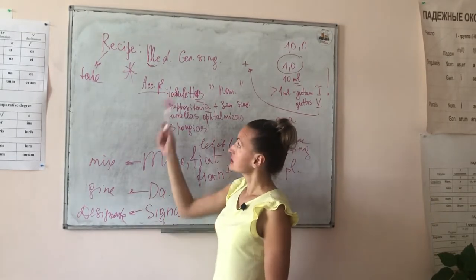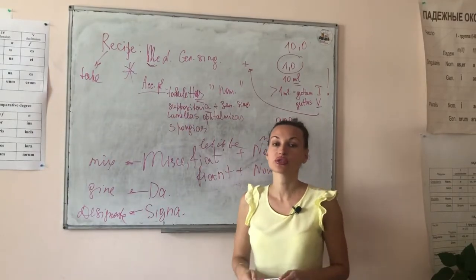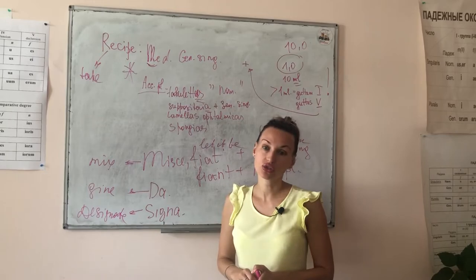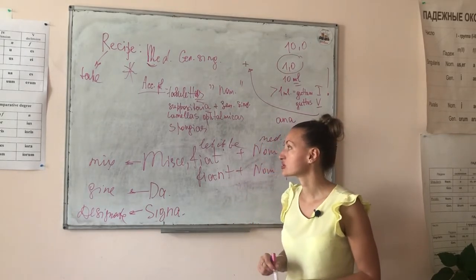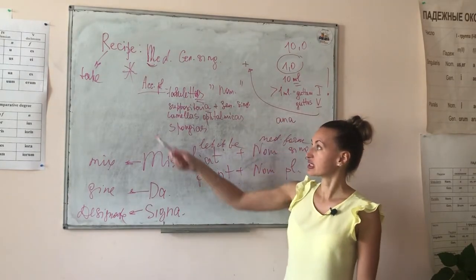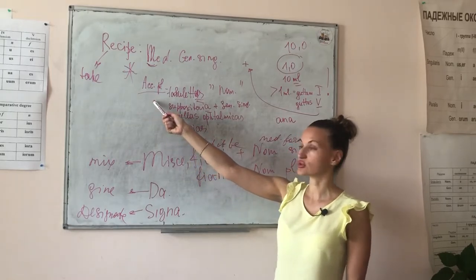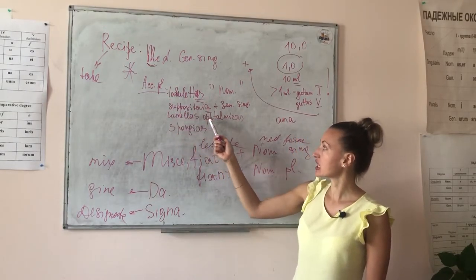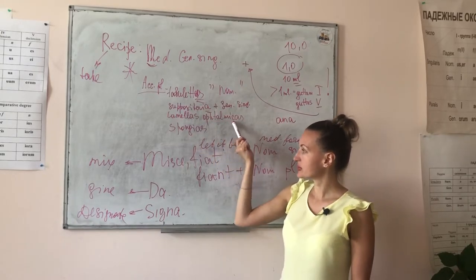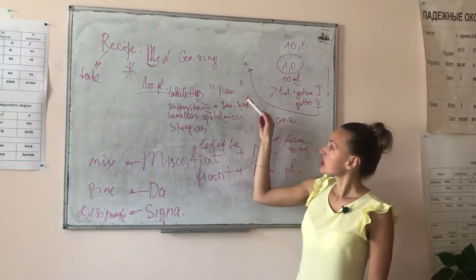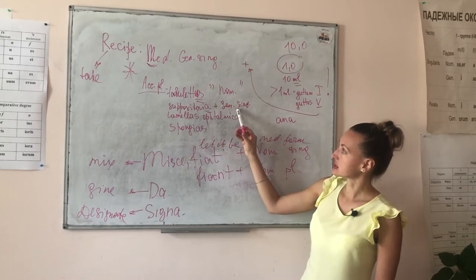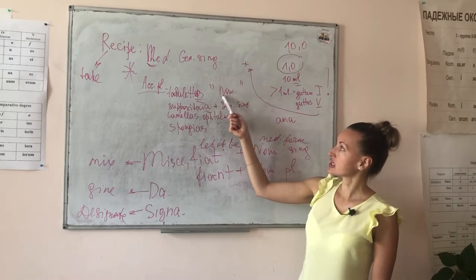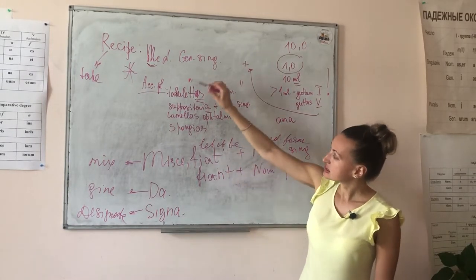This next one is the easiest, I think. If we need to indicate in the prescription that this is a ready-made medication — for example, where the doctor writes out tablets, suppositories, lamellae, or spongias — we must remember that these forms will be in the accusative plural: 'tabuletas' for tablets, 'suppositoria' for suppositories, 'lamellus ophthalmicus' for lamellae, and 'spongias' for spongias. The name of the drug after these forms will be in the genitive case. If we have the exact name of the drug as 'lapis,' then after 'lapis' the name of the drug will be in nominative singular.